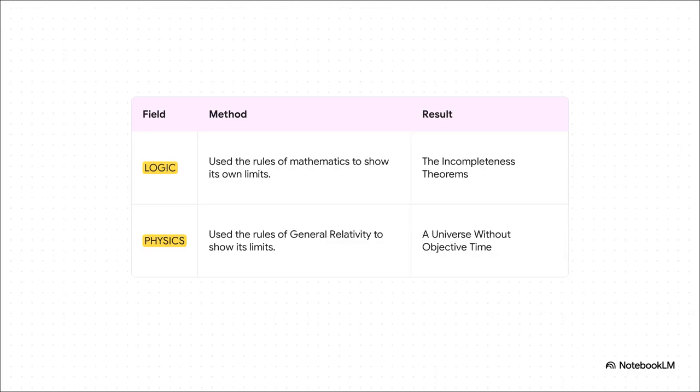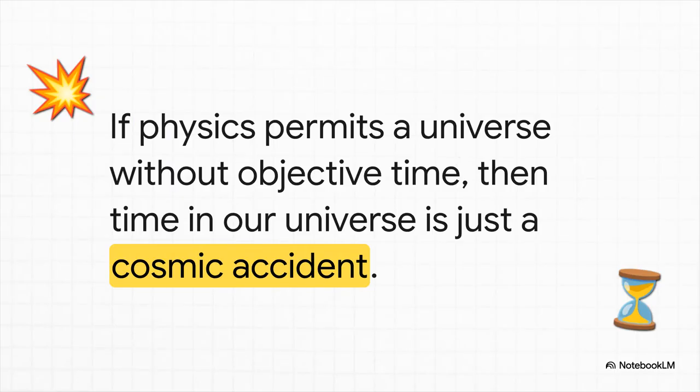This was Gödel's signature move. It's what made him a legend. Remember, in logic, he used the rules of mathematics to prove that mathematics itself could never be complete. He used this system to show the system's flaws. And that's exactly what he did here. He took Einstein's beautiful rules of general relativity and followed them perfectly to create a universe where the concept of a flowing universal time just completely evaporates.